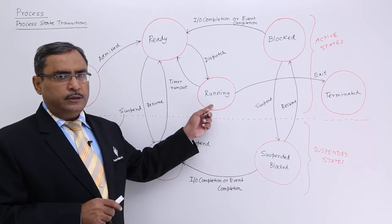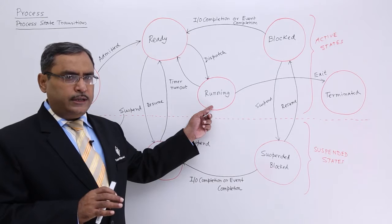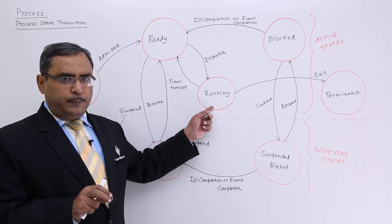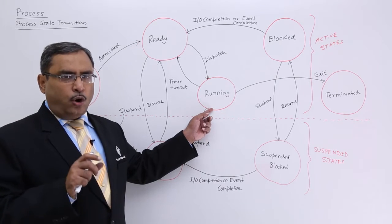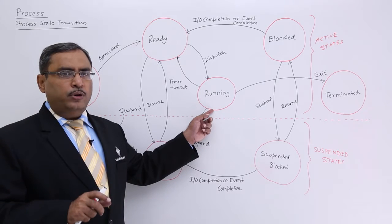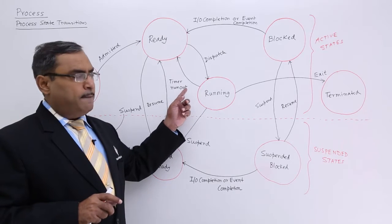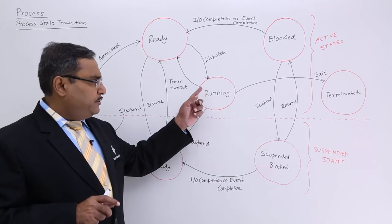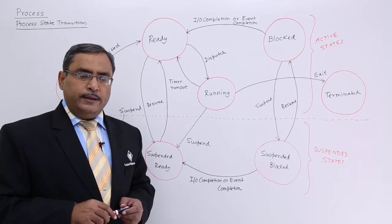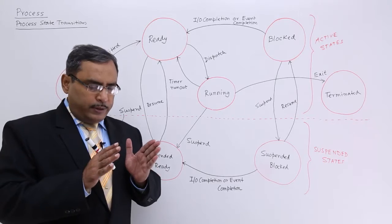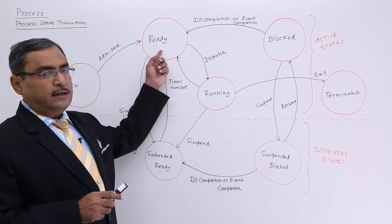During execution, some incidents may happen. For example, in a round robin scheduling, multiple processes are in execution and each process is given a time slice also known as a quantum. When the quantum expires, a timer run out occurs and the process transitions from the running state back to the ready state, and it is found in the ready queue again.